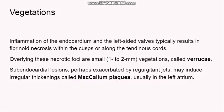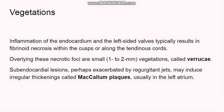Another lesion which occurs in rheumatic heart disease is the vegetations. Whenever there is inflammation — here inflammation of the endocardium — this results in fibrinoid necrosis within the cusps of the valves or along the tendinous cords of the valve. Overlying these necrotic foci, there can be some growth — these are 1 to 2 mm vegetations, known as verrucae.